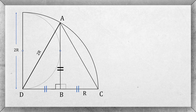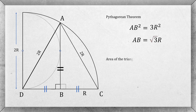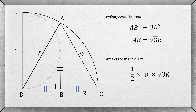Therefore, the hypotenuse AC equals AD, which equals the radius of the quarter circle, 2r. ABC is a right triangle, so we can determine AB from the Pythagorean theorem. AC is 2r, so AC² equals 4r², and BC equals r, so BC² equals r². Simplifying gives AB equal to √3·r. So the area of the triangle is half times base BC times height AB, where BC equals r and AB equals √3·r. This gives the area of the triangle as (√3/2)r².